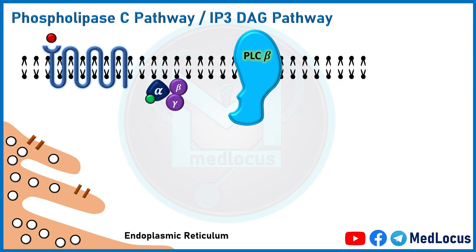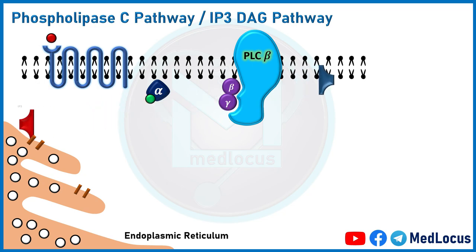Now we'll talk about the phospholipase C pathway, also called the IP3-DAG pathway. In this pathway, when an agonist binds to the receptor, it activates the Gq protein, which activates the enzyme PLC-beta, or phospholipase C-beta, present on the cell membrane. PLC-beta catalyzes the cleavage of PIP2, or phosphatidylinositol 4,5-bisphosphate, into DAG (diacylglycerol) and IP3 (inositol trisphosphate).